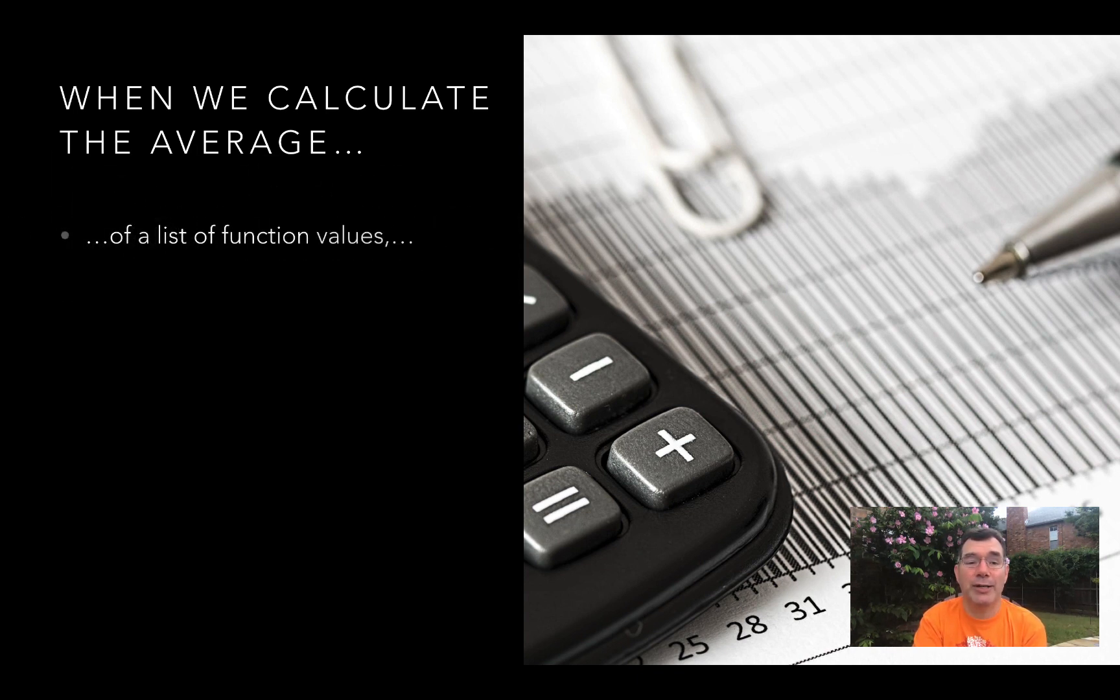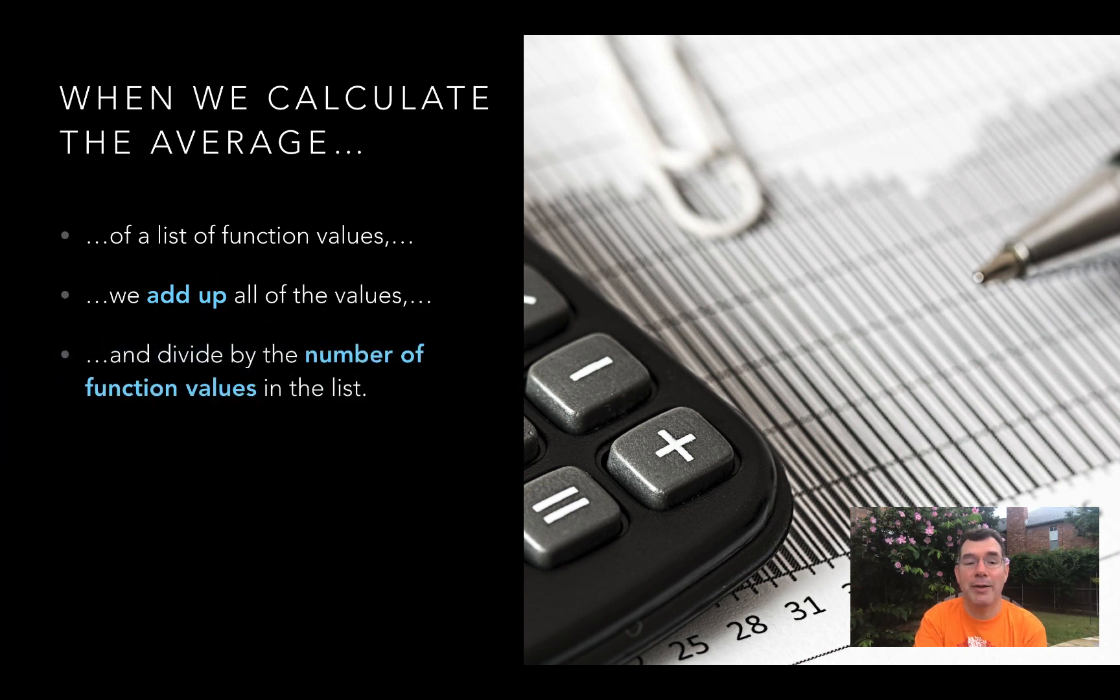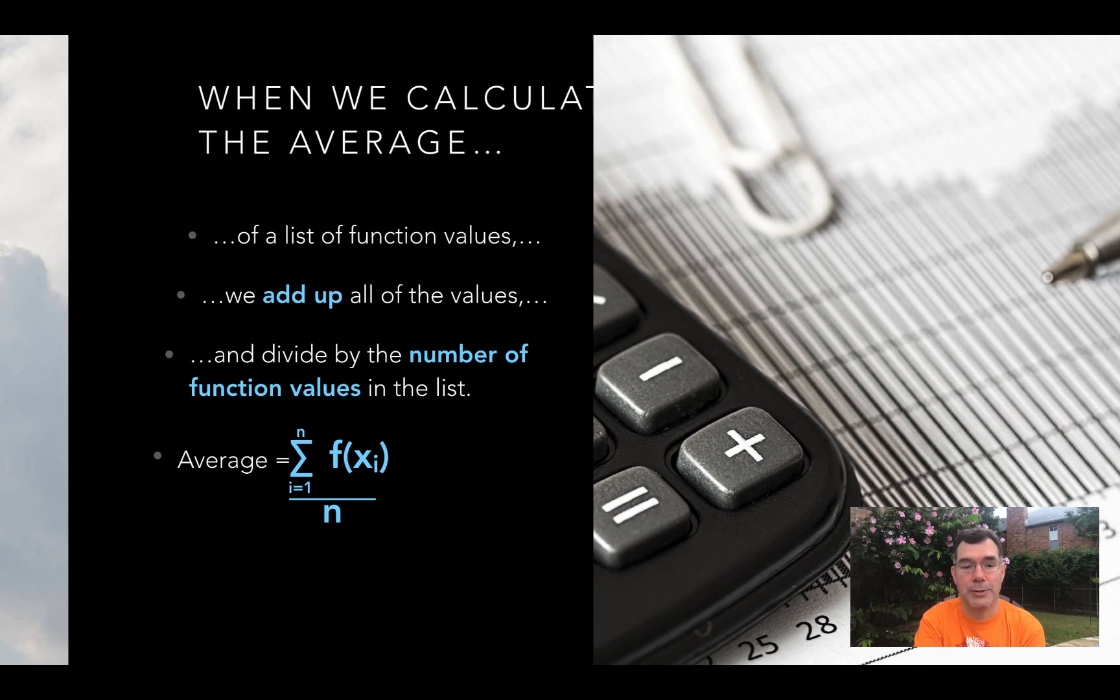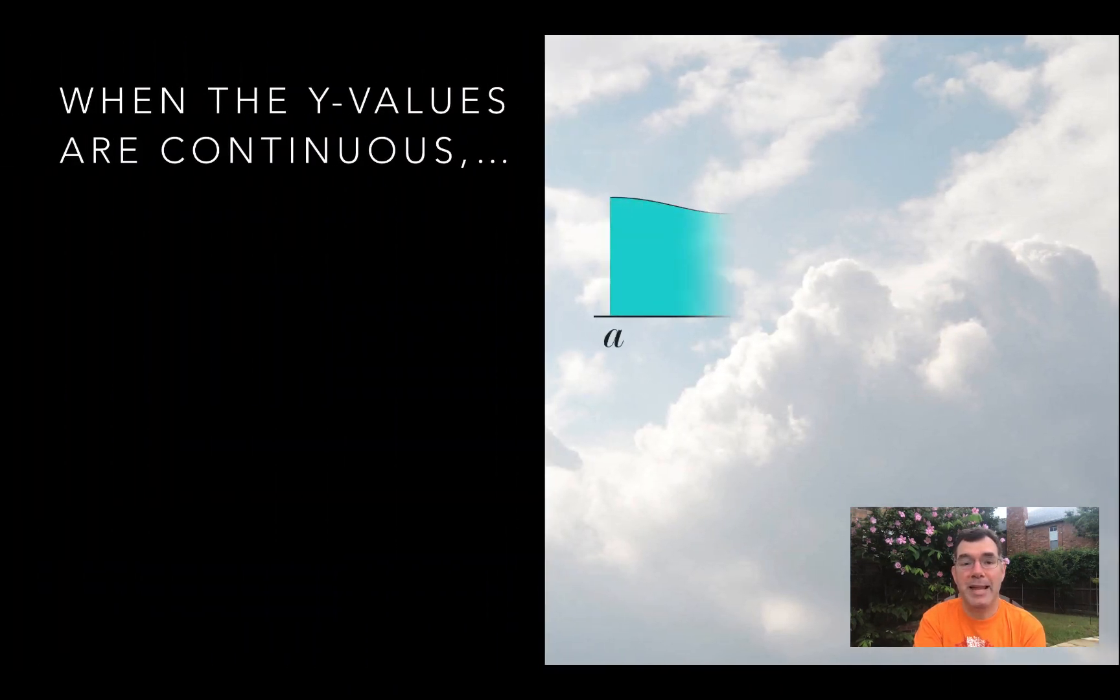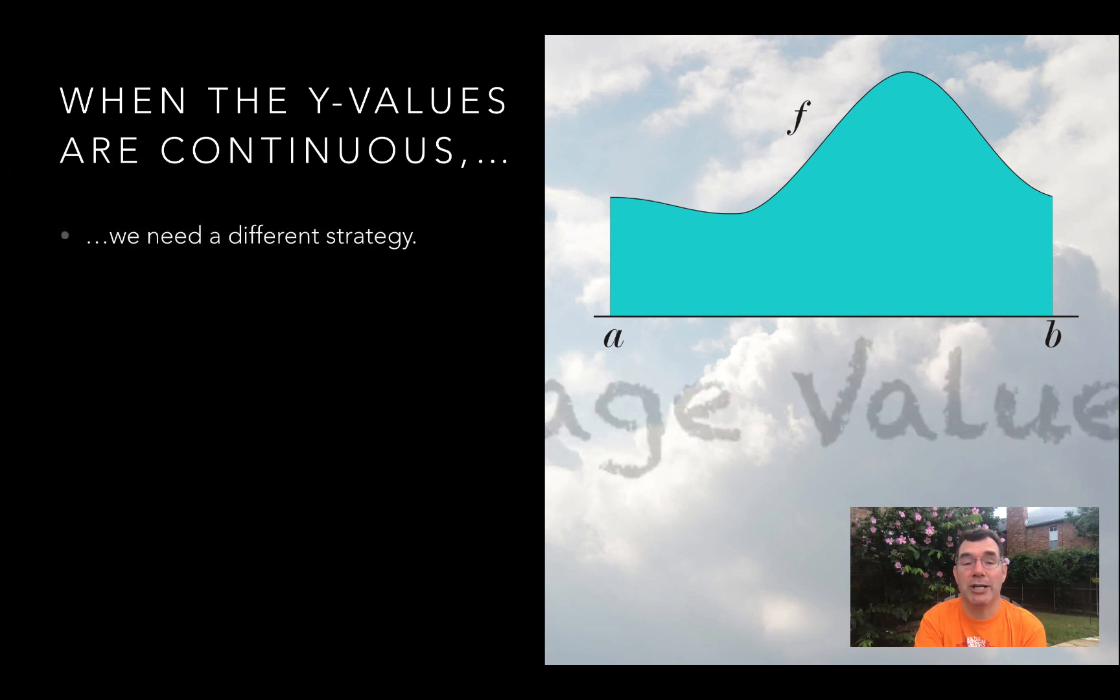Normally when we calculate the average of a list of numbers, we add up all the values and divide by the number of values in the list. The sum of function values divided by the number of function values. Now if the y values are continuous and there's an infinite number of them, we need to change our strategy.